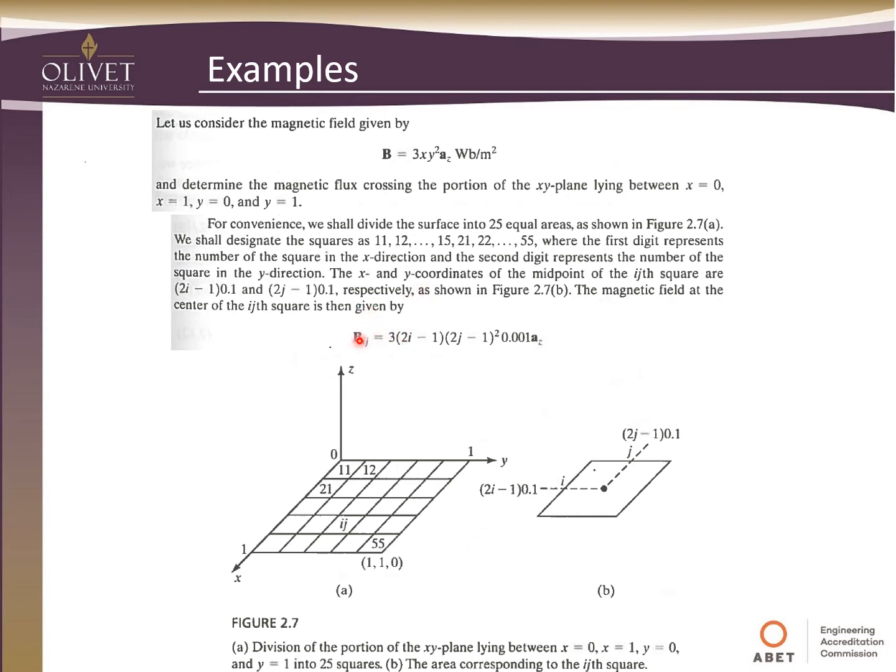Also, we have our B term here. So our x, as our x goes, it's going to be 2j minus 1, which is what this is showing us here, times 0.1. So each step is going to be that until we get all the way out. Same thing with the y term, 2j minus 1, again, times 0.1. So that's where we get this 0.001 when we multiply 0.1 times 0.1. 3 is from the original equation. So we just plug in our value for x, our value for y. And so this is our definition of the IJth term for the flux density.